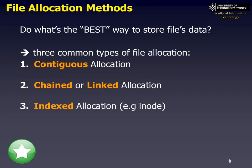We looked at the three common types of file allocation: contiguous, chained or linked, and indexed.